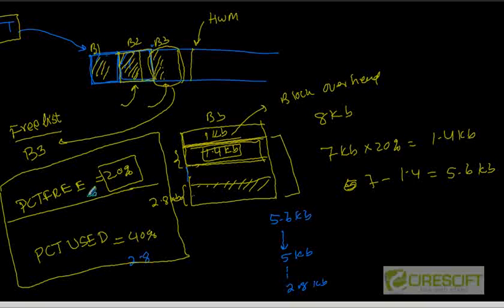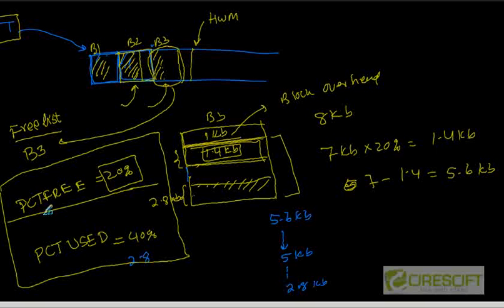You can just go for PCT-free of one percent or two percent. So this is what you should learn about PCT-free and PCT-used. Whenever you are creating a table, you have to give these parameters. These are called the storage parameters. You can give those two parameters. Thank you so much.